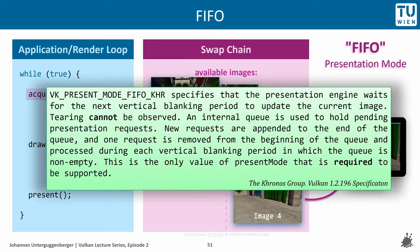The specification states: VK_PRESENT_MODE_FIFO_KHR specifies that the presentation engine waits for the next vertical blanking period to update the current image. Tearing cannot be observed. An internal queue is used to hold pending presentation requests. New requests are appended to the end of the queue, and one request is removed from the beginning and processed during each vertical blanking period in which the queue is non-empty. This is the only value of present mode that is required to be supported.